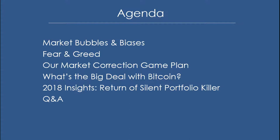Here's our agenda for today: we're going to cover market bubble and bias information that impacts our fear and greed, our market correction game plan using the adaptive system, a discussion of Bitcoin — what it is and what technology is behind it — and 2018 insights including the return of a silent portfolio killer. If you're watching the video and have a question, feel free to call us or email myteam@clientfirsttaxandwealth.com.